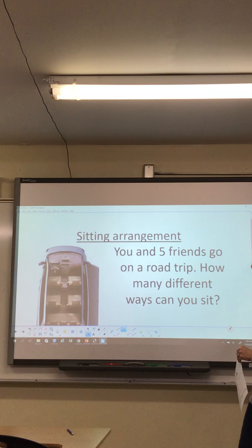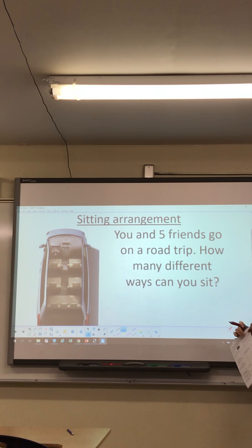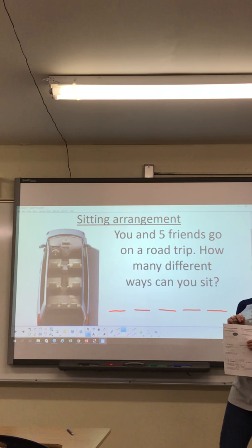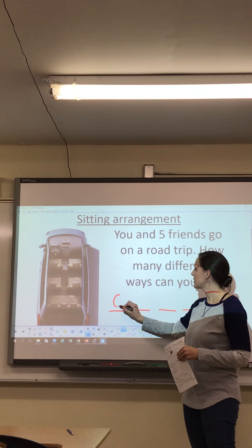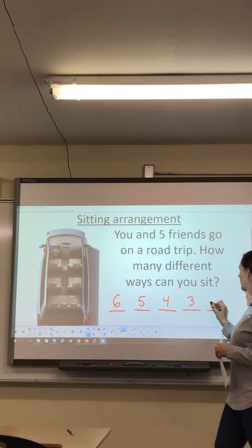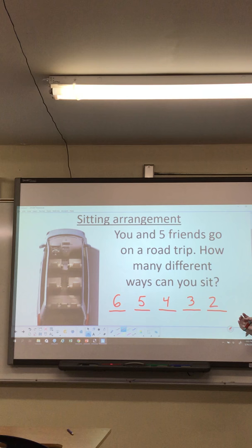The first example is a seating arrangement for a road trip. You and five friends go on a road trip — how many different ways can you sit? There are six seats available and six people going. You need to create five spaces. You choose out of six seats for the first spot, then five, four, three, two — you don't go all the way to one because you only have five people going. If you do the math, you get 720.